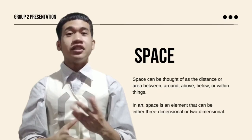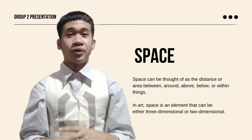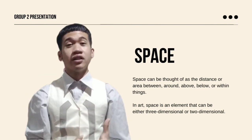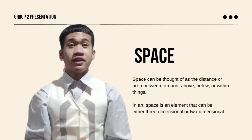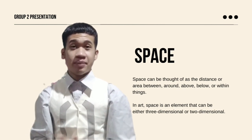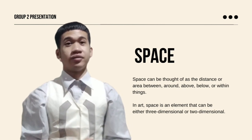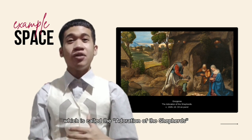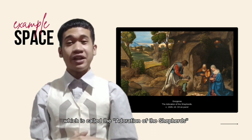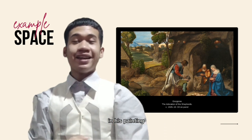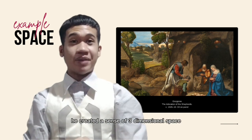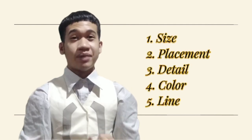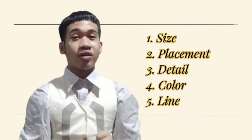Space can be thought of as the distance or area between, around, above, below, or within things. In art, space is an element that can be either three-dimensional or two-dimensional. For example, we have the painting of Giorgione, called The Adoration of the Shepherds. In his painting, he created the sense of three-dimensional space by using five techniques: size, placement, distance, color, and lines.